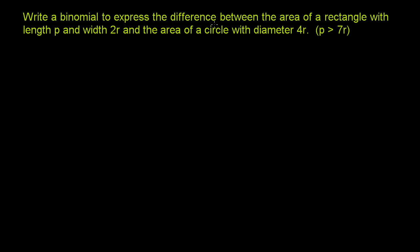Write a binomial to express the difference between the area of a rectangle with length p and width 2r and the area of a circle with diameter 4r. And they tell us that p is greater than 7r.